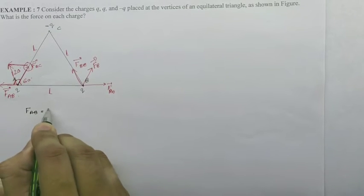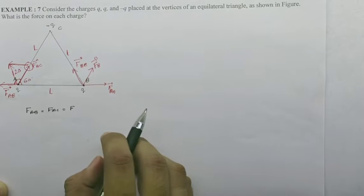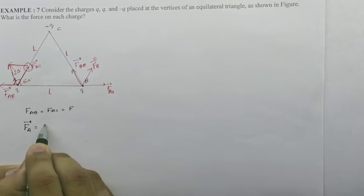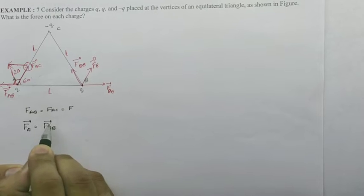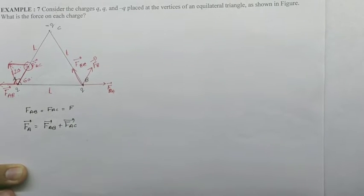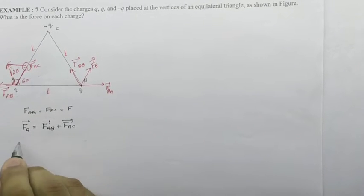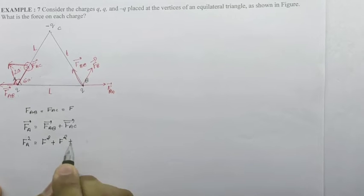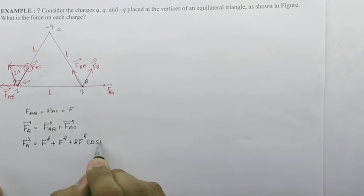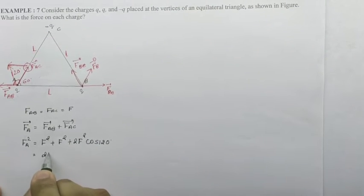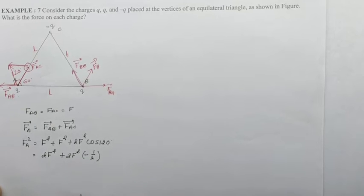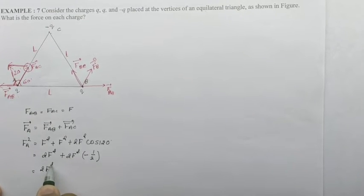By magnitude, FAB equals FAC which equals F. Now force on FA is the sum of FAB plus FAC. Squaring: FA² equals F² plus F² plus 2F² cos 120°. That's 2F² plus 2F² times minus half. Two cancels, giving 2F² minus F² equals F².